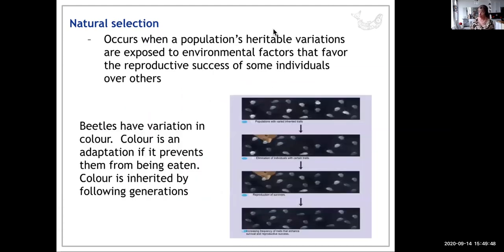Natural selection occurs when heritable variations are exposed to environmental factors that favor reproductive success of some individuals over others. This is a nice diagram of beetles—they have a variation in color. Here's a new incident in the environment: a predator. The predator is selective, selecting the lighter-colored beetles because you can see them better. The alleles or genes that give rise to a light color may be lost from the population. The subsequent population has a different set of genes, and that is what descent with modification means—one population has a different set of genes than the previous one.